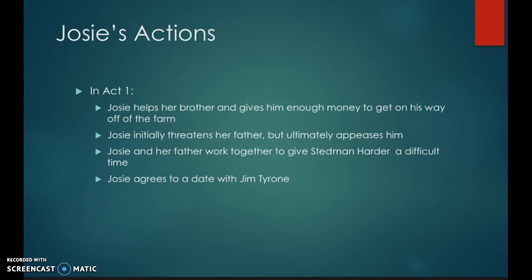Now let's look at Josie's actions in Act 1. Josie helps her brother and gives him enough money to get on his way off the farm. Josie initially threatens her father, but ultimately appeases him. Josie and her father work together to give Stedman Harder a difficult time. And Josie agrees to go on a date with Jim Tyrone. She says a lot of gruff things, but ultimately what she does is incredibly kind to the people she cares about. So that tells us a couple things about who she is — she has a gruff exterior, but she's ultimately a pretty kind and accepting person.